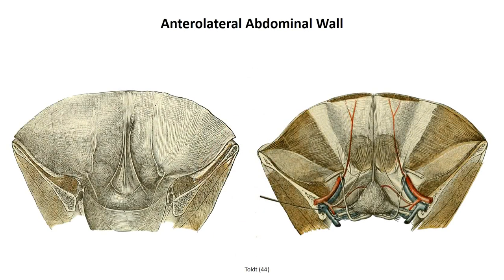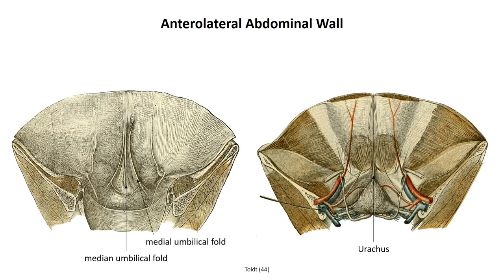When looking at the inner surface of the anterolateral abdominal wall, it's not perfectly smooth. One midline structure and two pairs of lateral structures create five protrusions visible through the fascial covering. The unpaired median umbilical fold lies along the midline, extending from the apex of the bladder up to the umbilicus, created by the urachus — the remnant of the allantois, an embryological structure that manages liquid waste in the embryo. Just lateral are the bilateral medial umbilical folds, marking the location of the umbilical ligaments — embryological remnants of the umbilical arteries that delivered blood from the fetus to the placenta.